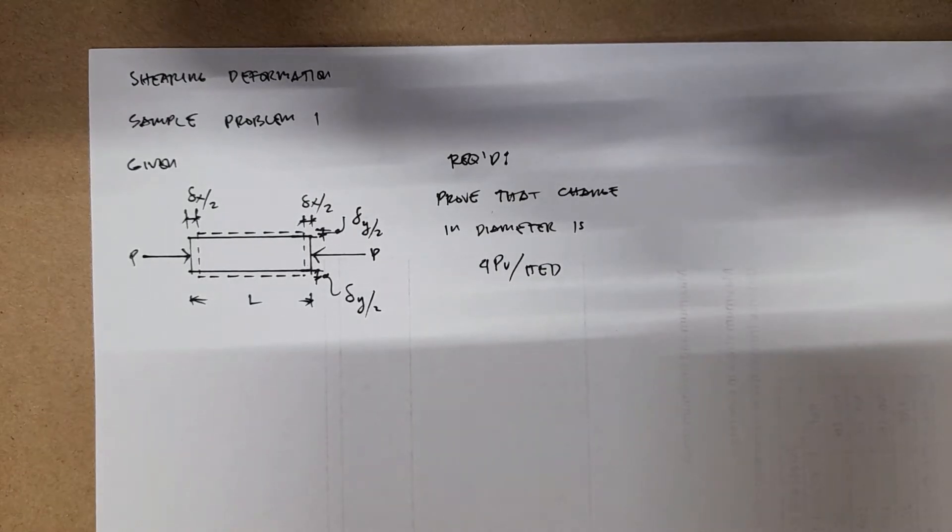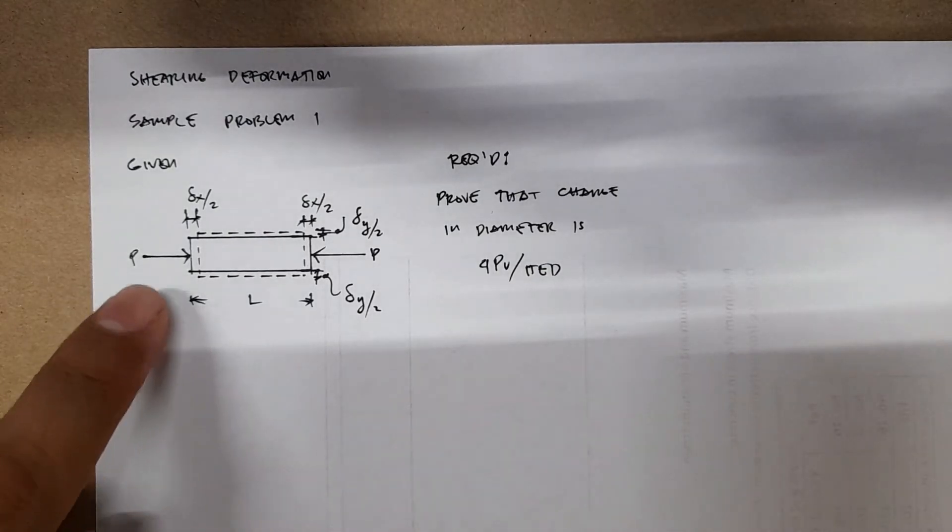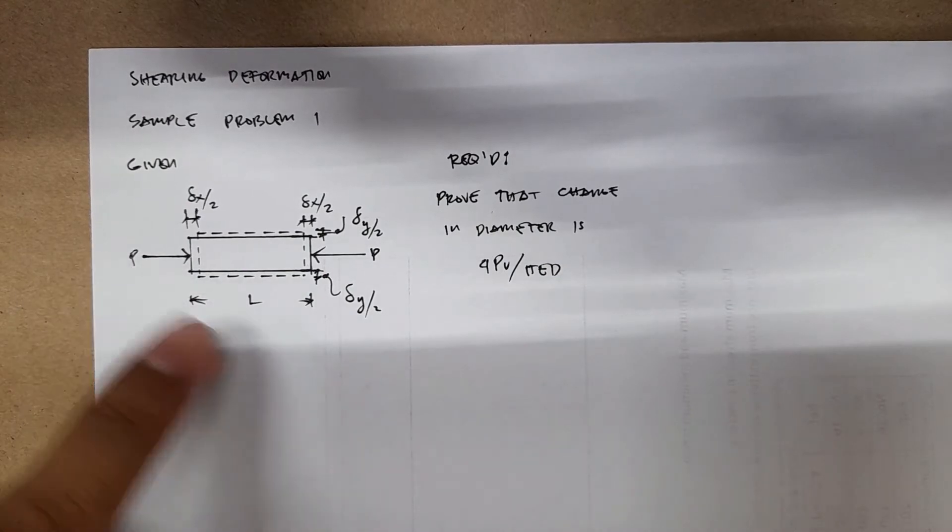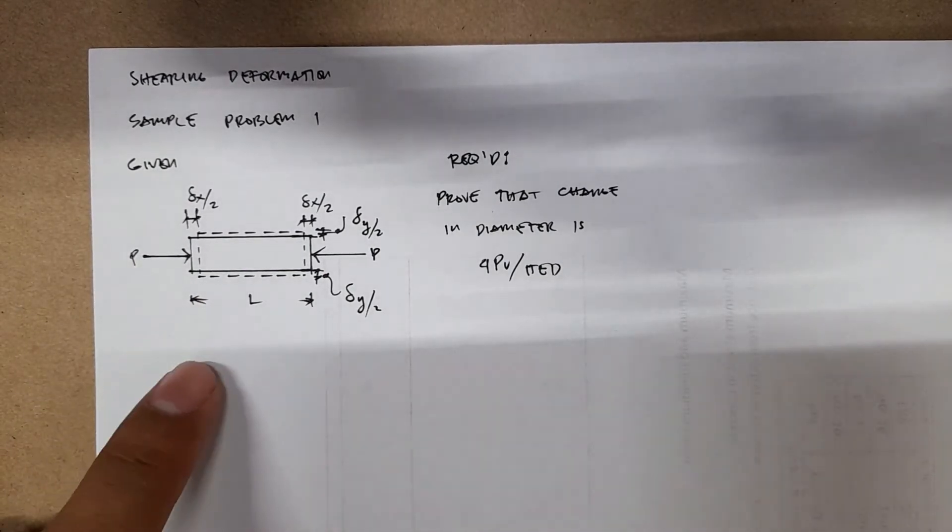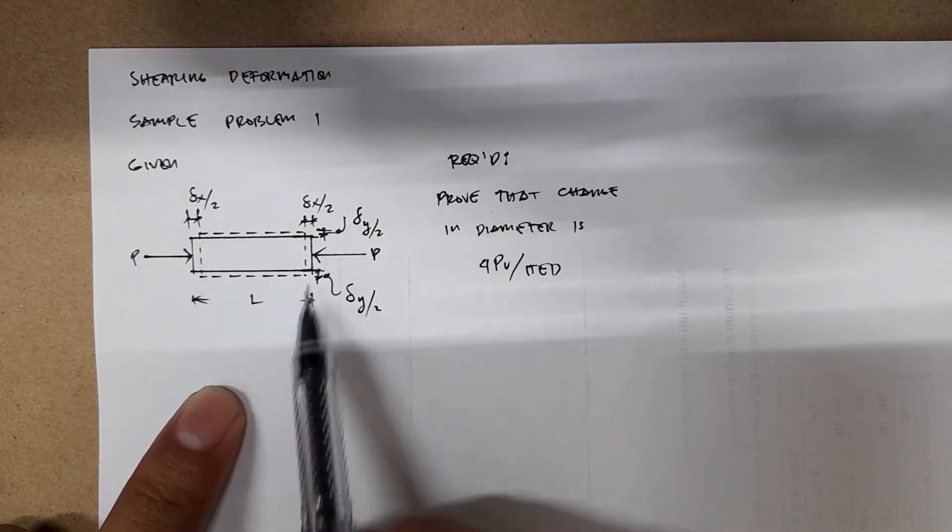Here we have an example for shearing deformation. So we have a cylindrical rod, not a tube but a rod, cylindrical rod with diameter D. And then we have another dimension, L, this is the length.